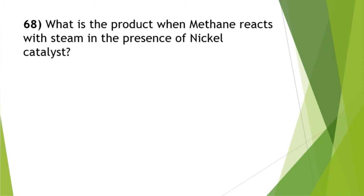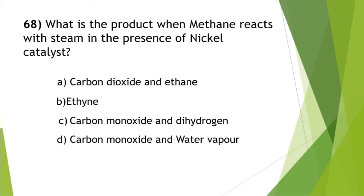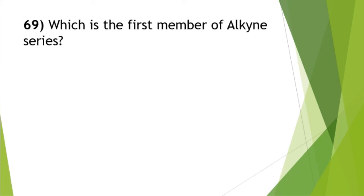What is the product when methane reacts with steam in the presence of a nickel catalyst? The answer is option C — carbon monoxide and dihydrogen (H₂). Methane reacts with steam at a temperature of 1273 Kelvin in the presence of nickel catalyst to produce carbon monoxide and dihydrogen.